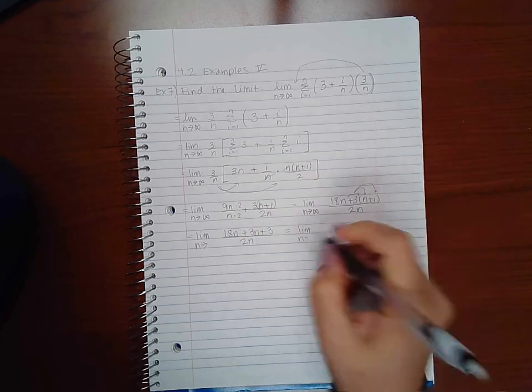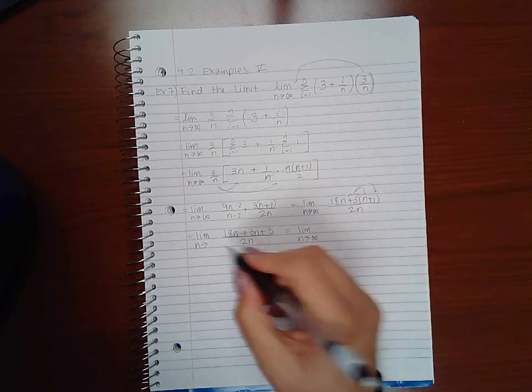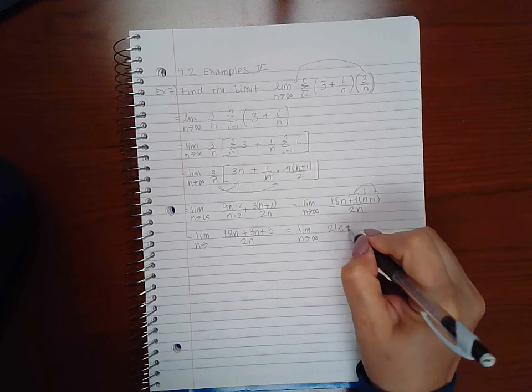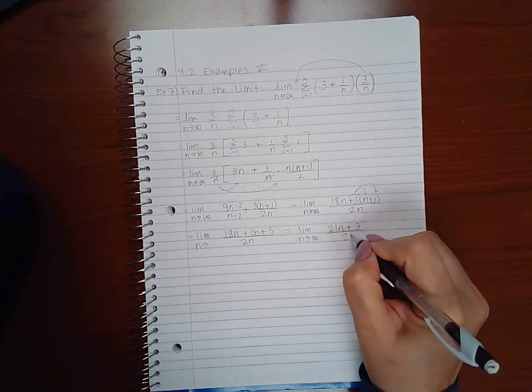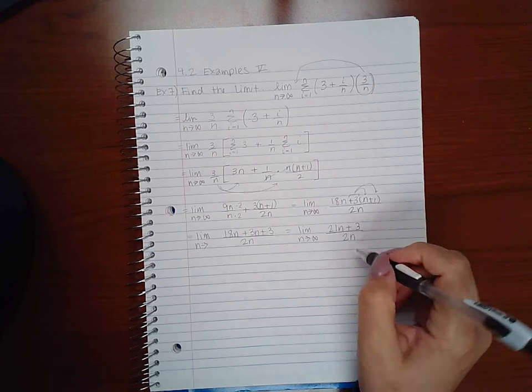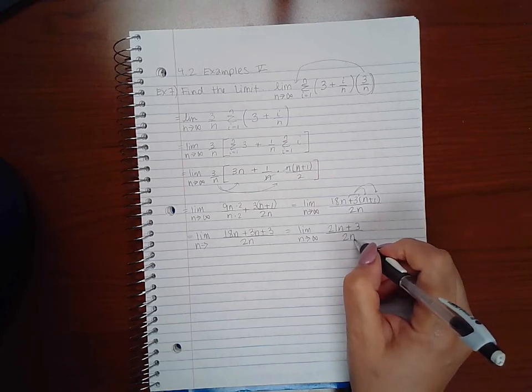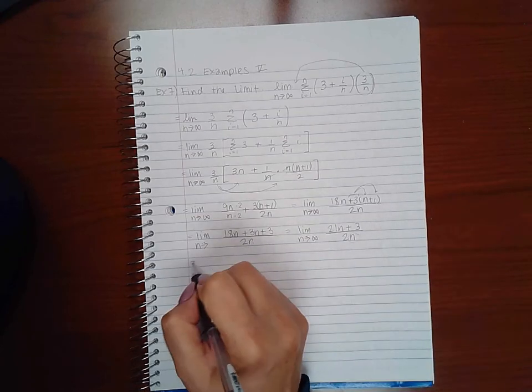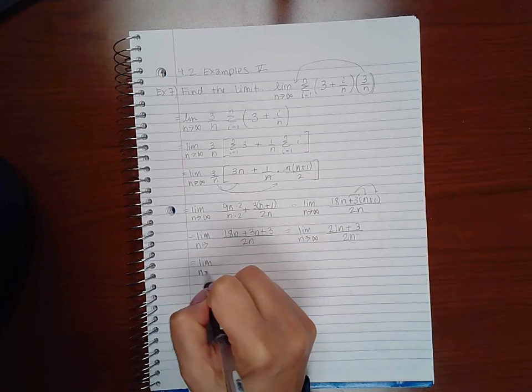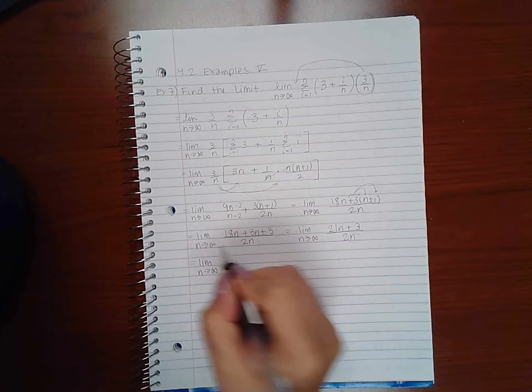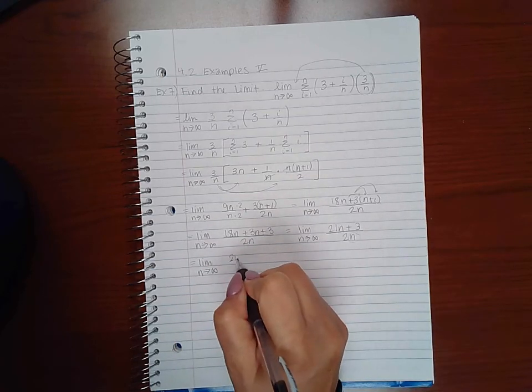Then we will have 21N plus 3 over 2N. Then the strategy is to divide by the highest exponent, the highest exponent downstairs which is just N. So I am going to be taking this and dividing by N in the numerator and then dividing by N in the denominator.